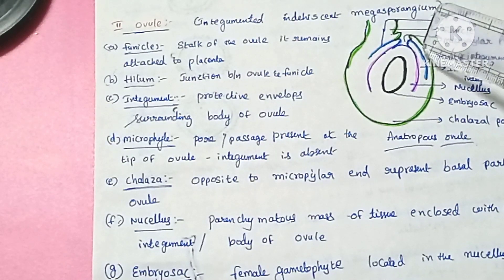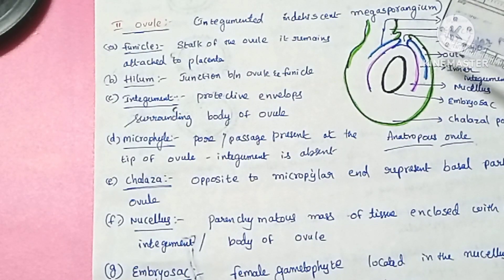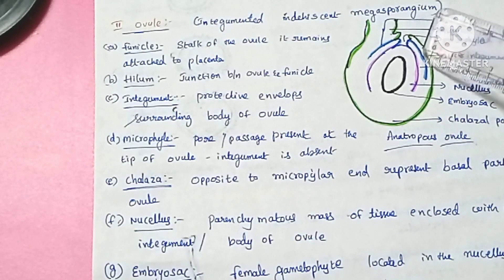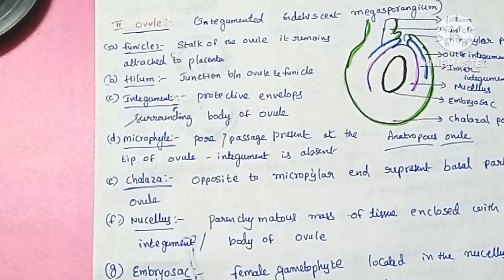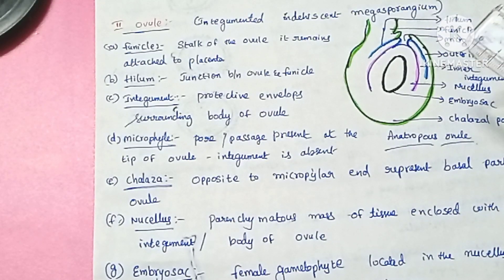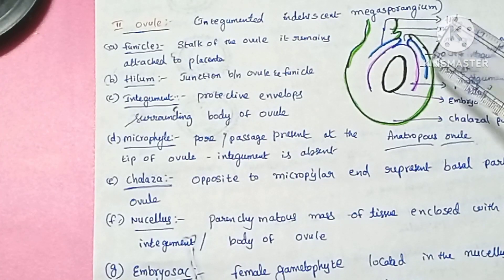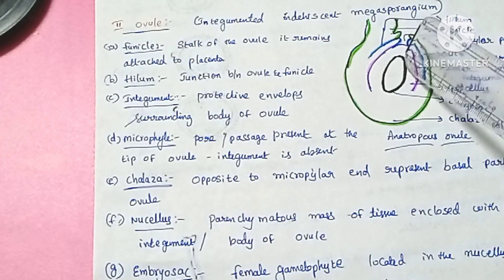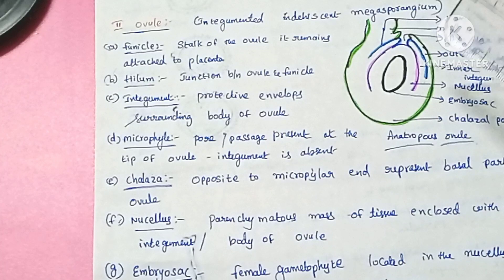Next is the integument. There are two integuments: an outer integument and an inner integument. The integuments are nothing but protective envelopes surrounding the ovule.